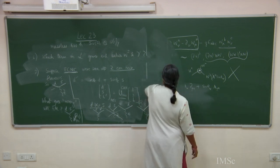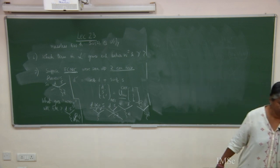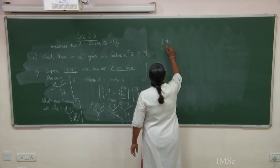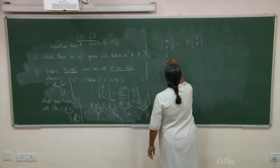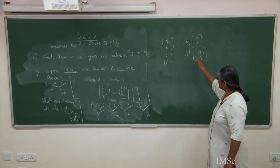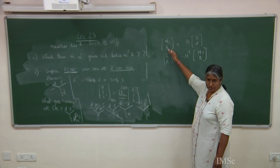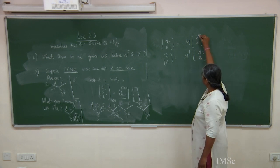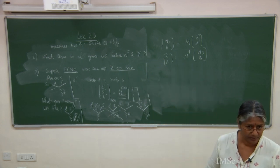Because photon and Z are simply mixtures of W_3 and B, if Z allows flavor changing, then A must also allow it — they are made from the same fields in different combinations. That means the electromagnetic field would carry flavor quantum numbers like d-bar s, allowing a photon to send d to s. Since the photon does not carry such quantum numbers, flavor changing neutral currents cannot be simply implemented in the standard model.